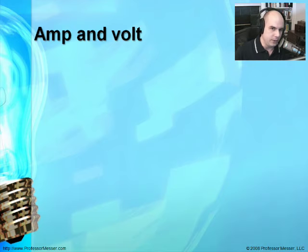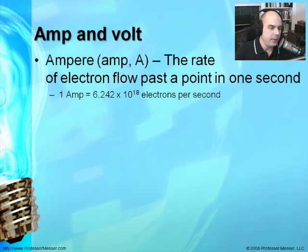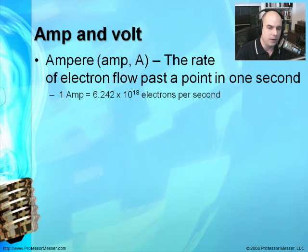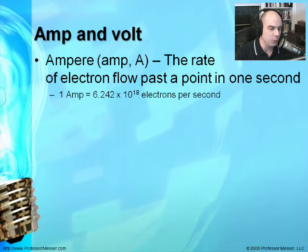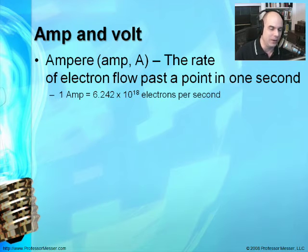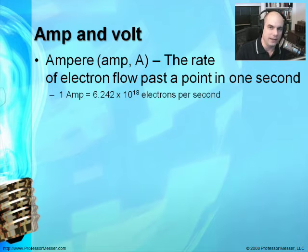Let's start with understanding what an amp is and what a volt is. An amp, or ampere, is the rate of electron flow through a particular point in one second. In fact, one amp is 6.242 times 10 to the 18th electrons per second. That's a lot of electrons flowing through, which is why we use the shorter term 'amp' to describe a certain rate of power usage.